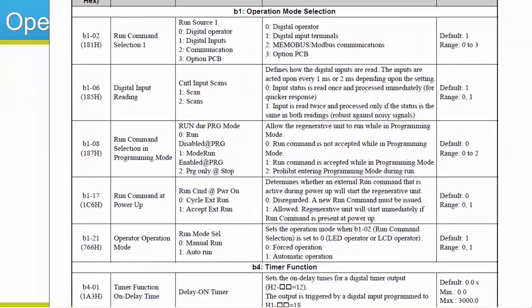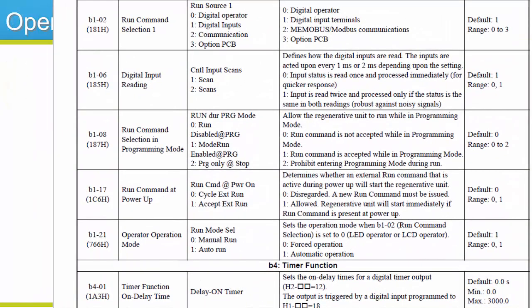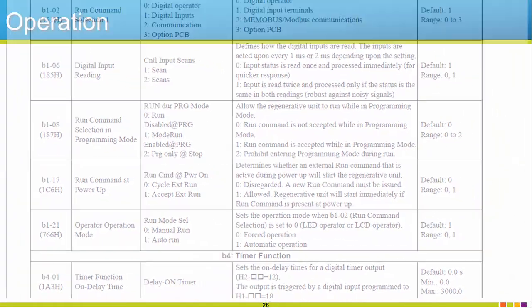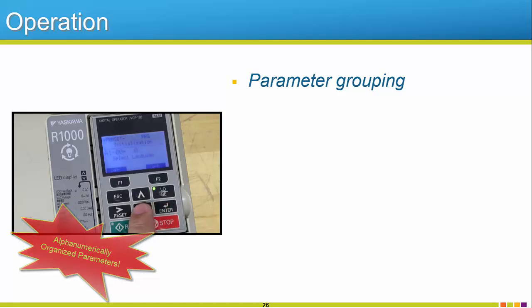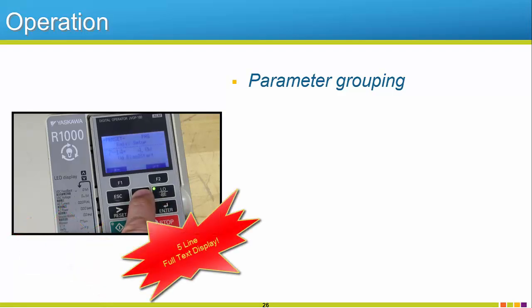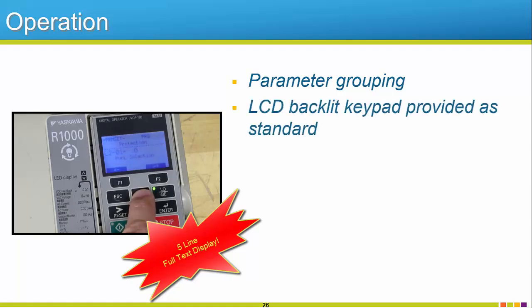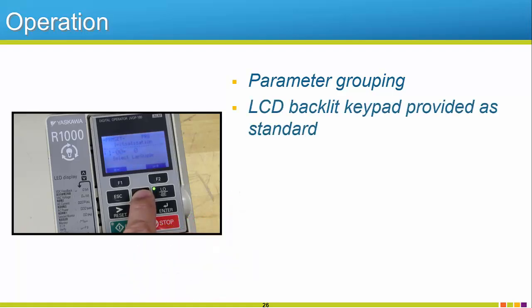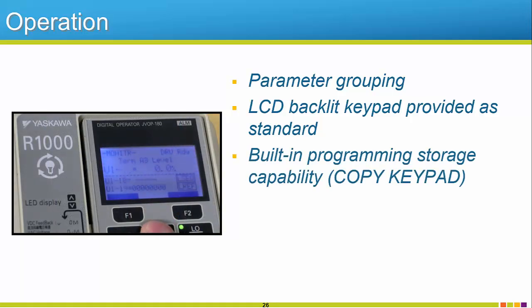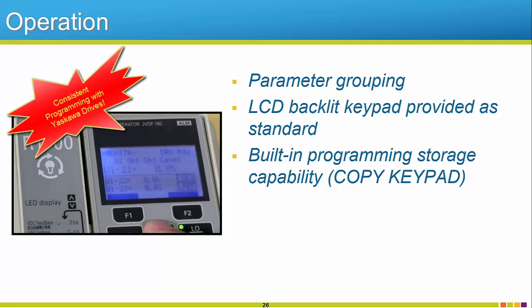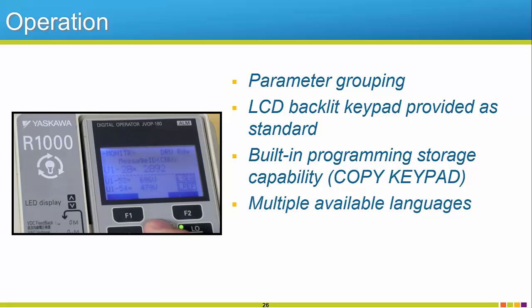The ease of programming is a critical benefit on all Yaskawa products. The R1000, of course, is no exception. Stress-free programming is provided since all parameters are organized into groups, making finding what you need simple and efficient. The R1000 features a full-text keypad. The standard display is an illuminated LCD type, making it easy to read and interpret. The keypad offers parameter backup capability with memory built right into the keypad. Navigation is also intuitive and works the same way as Yaskawa's other 1000 series keypads. Additionally, there are multiple available languages that the keypad can display.